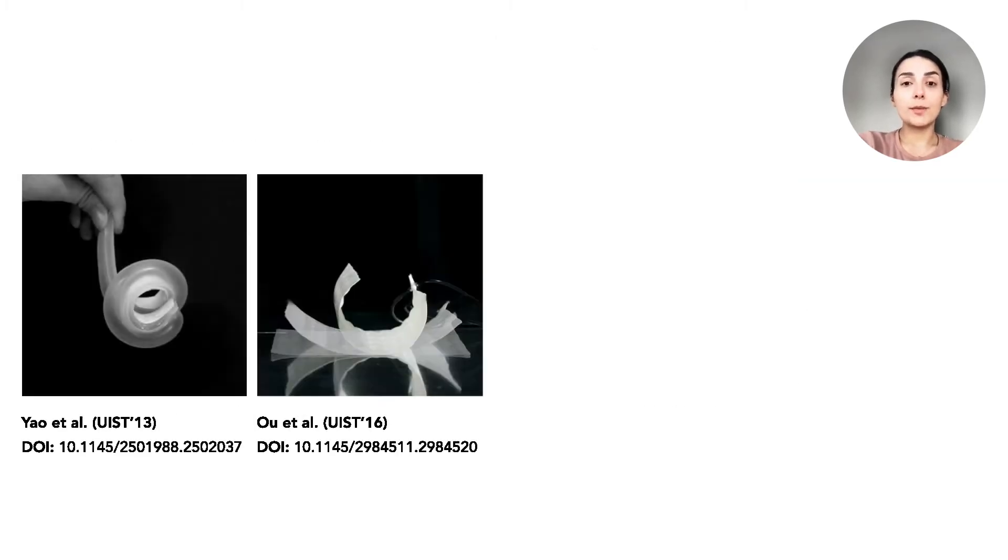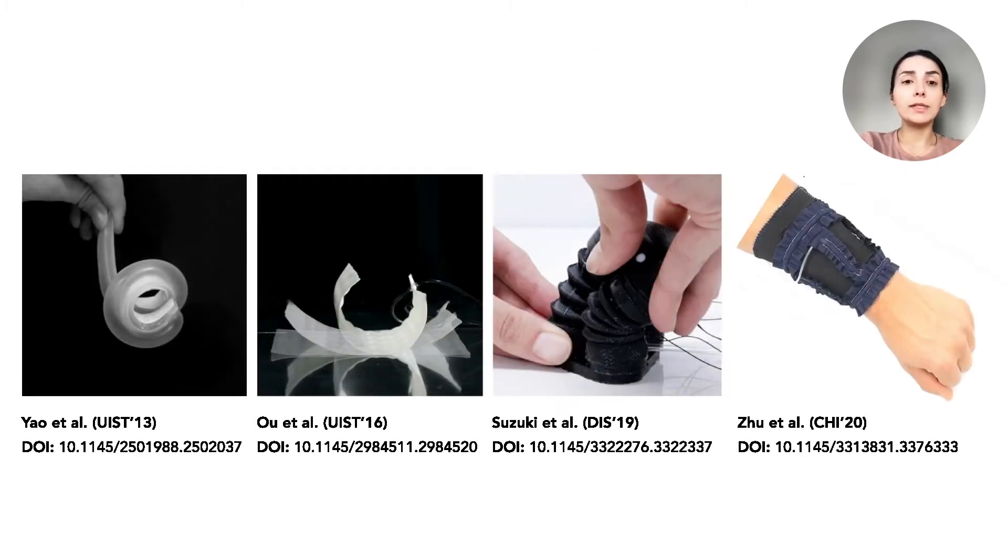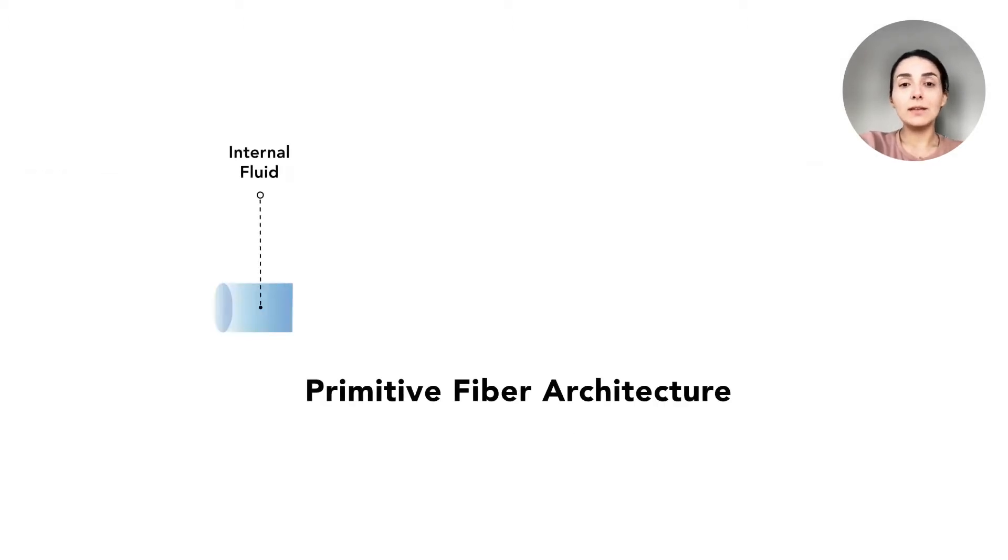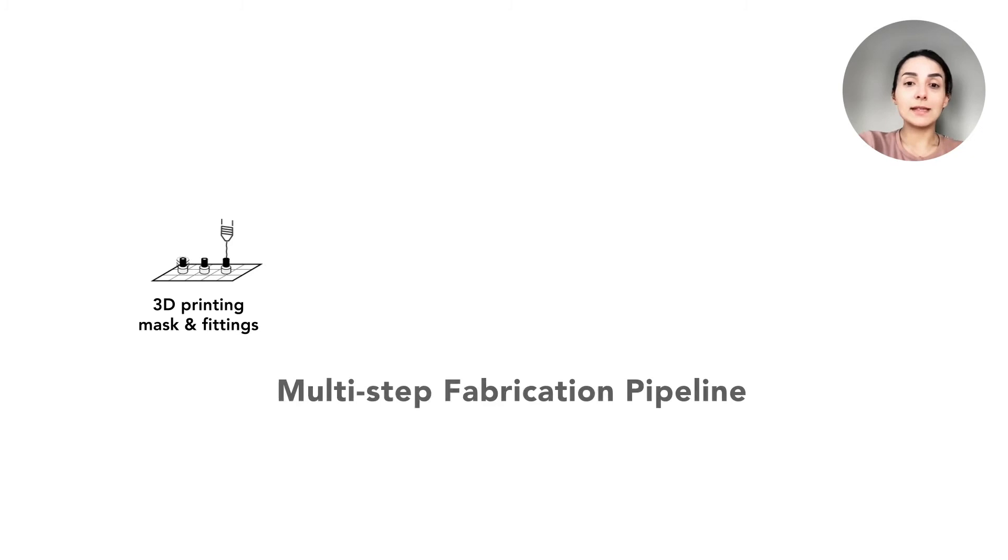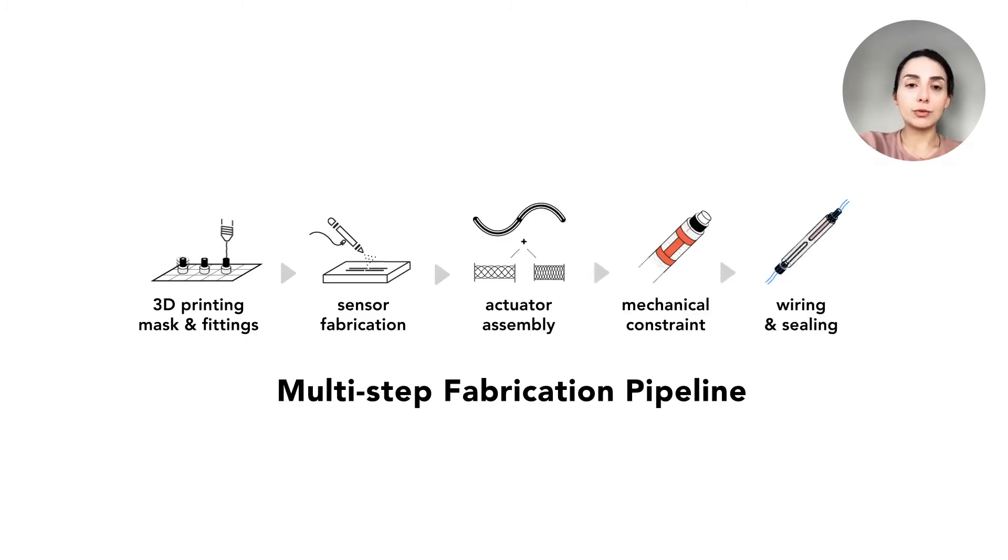Although fluidic actuation is abundantly leveraged by HCI research, previous work has not explored miniaturized actuators at a form factor that can act as a fiber in a textile assembly. In this work, we present OmniFiber, a soft fiber-based programmable material system and its accessible fabrication pipeline building on fluidic artificial muscles.